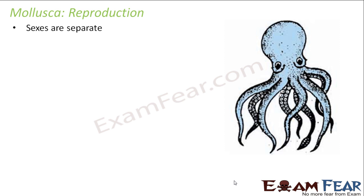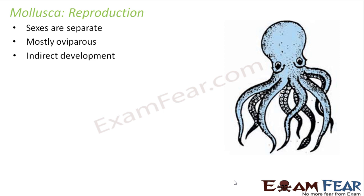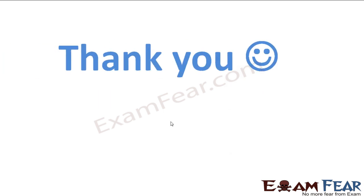Let us now look at reproduction. They reproduce sexually. Sexes are separate and they are mostly oviparous, meaning they lay eggs. They have indirect development — a larval stage is involved. The zygote develops and grows into a larva, which is an intermediate state, and that larva later grows up to become a mature adult.